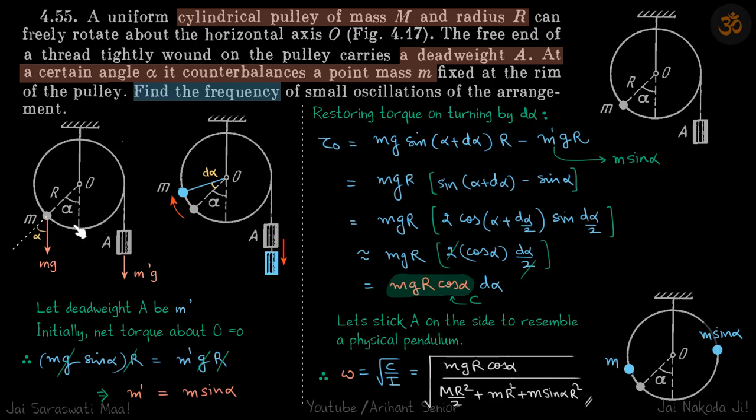Let's balance the forces first. We are balancing the torque about this point O. Let's say the deadweight's mass is m dash, so initially net torque about O is equal to zero.